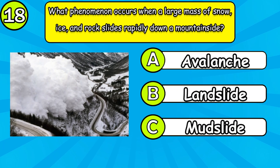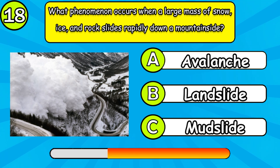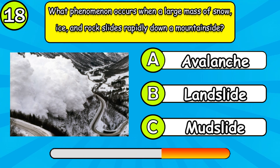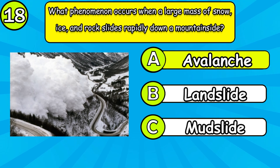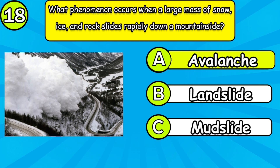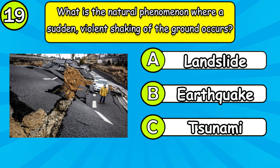What phenomenon occurs when a large mass of snow, ice, and rock slides rapidly down a mountainside? What is the natural phenomenon where a sudden violent shaking of the ground occurs?